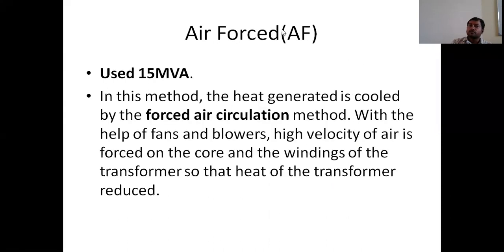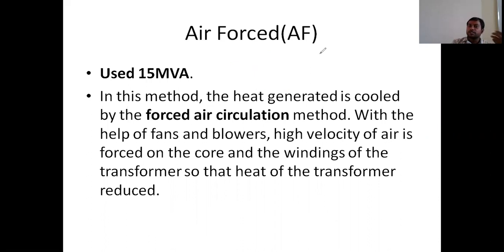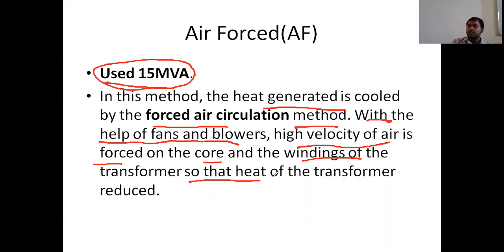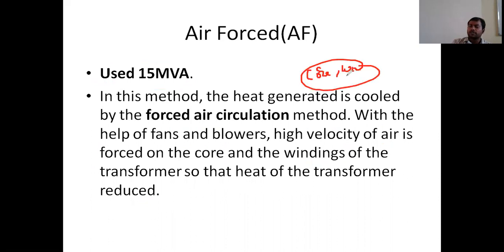The next method is air forced. Air forced means we need to use fans. As capacity increases, more temperature is produced, so this is used for 15 kVA rating. In this method, heat is dissipated by air circulation. With the help of fans, blowers, and velocity of the air, forcible air is released. The heat of the core and winding of the transformer is reduced by using forced air circulation.